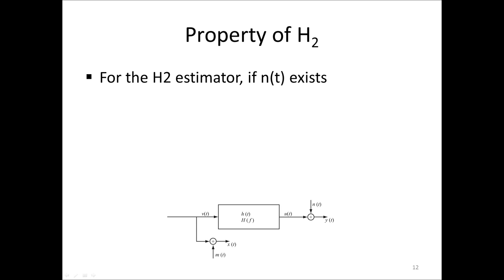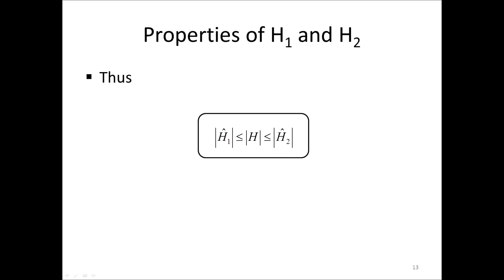Similarly, for the H2 estimator, if there is actually noise N on the output, then since the spectrum GYY is in the numerator of the H2 estimator, the H2 estimate will be too high. We have thus shown that the magnitude of the true value of H is always in between the estimates H1 and H2.